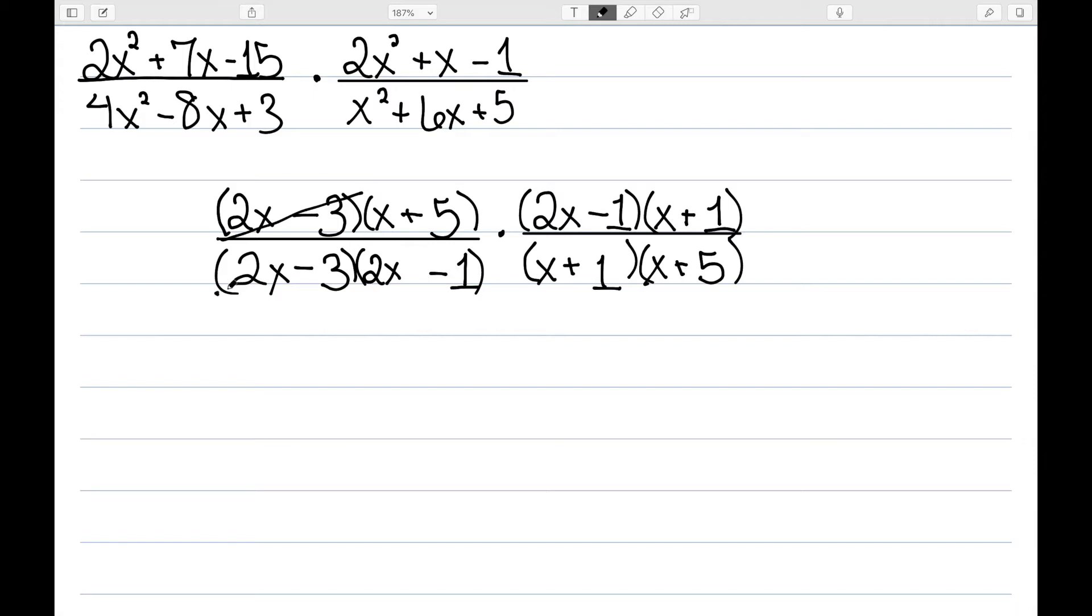I can now start canceling. I have 2x minus 3s on the top and bottom. I have x plus 5s on the top and bottom, x plus 1s as well as 2x minus 1s. So in this case, everything canceled, which means I'm just left with 1.